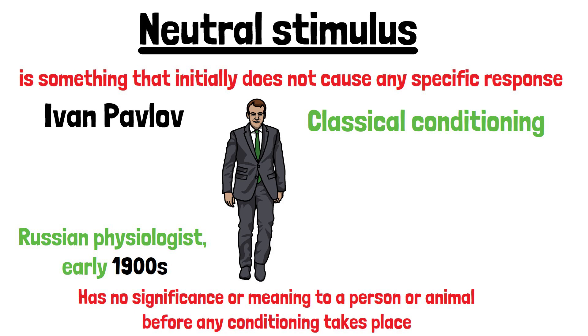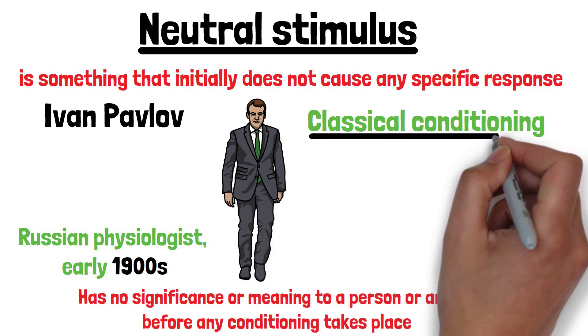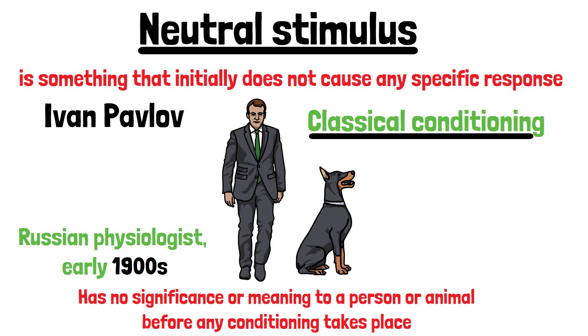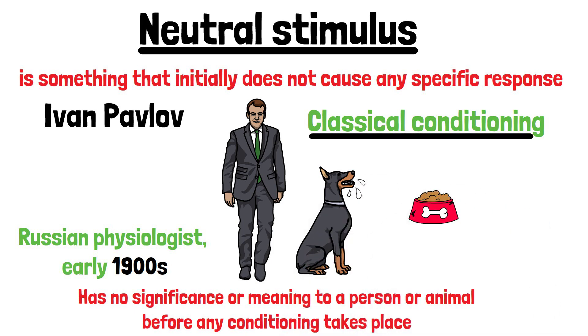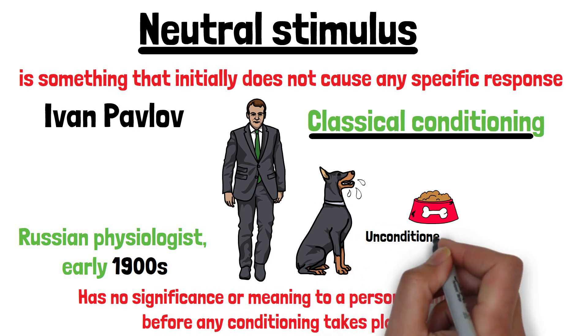In Pavlov's experiments, he discovered classical conditioning through his work with dogs. He noticed that dogs would salivate when they saw food, which is a natural, unlearned response to the food, an unconditioned stimulus.